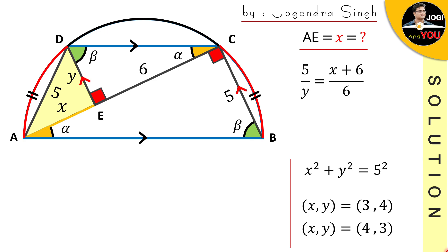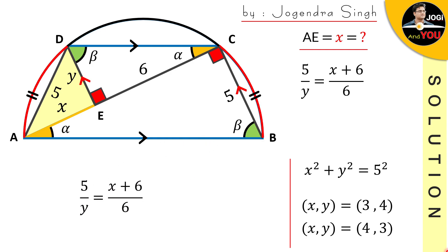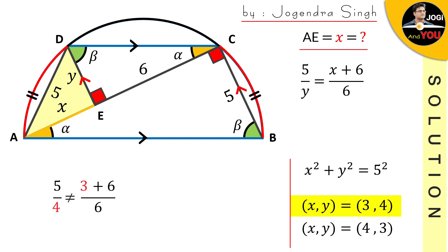Let's carry down the ratio equation and consider the first pair — x equals 3 and y equals 4. Replacing both in the equation: 5 over 4 is not equal to 3 over 2. So with x equal to 3 and y equal to 4, this equation is not satisfied. Because this equation is not satisfied, we cannot consider these values as our answer.